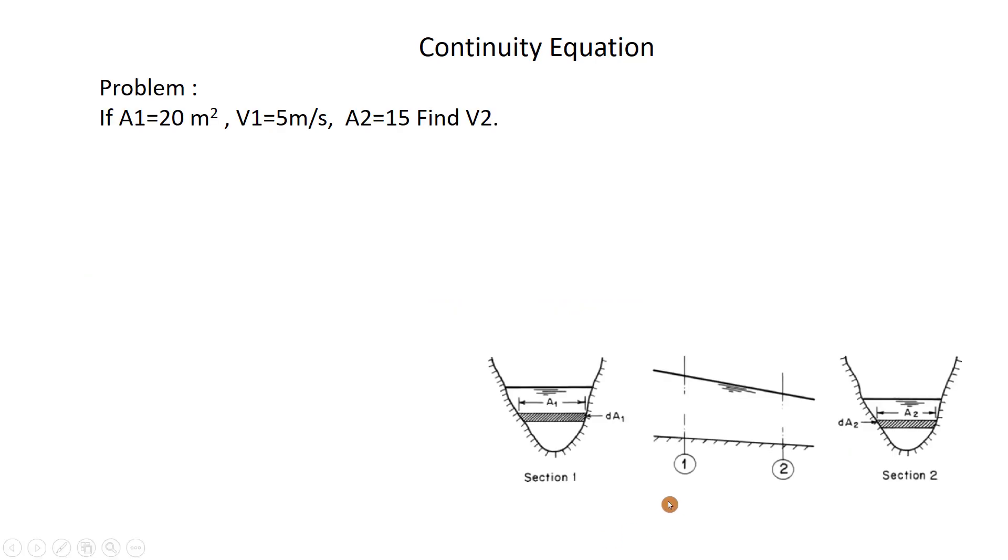Let's solve a problem. We have this channel with two cross sections, section 1 and section 2. If the area for section 1 is 20 m², velocity is 5 m/s, and area at section 2 is 15 m², we have to find the velocity at cross section 2.